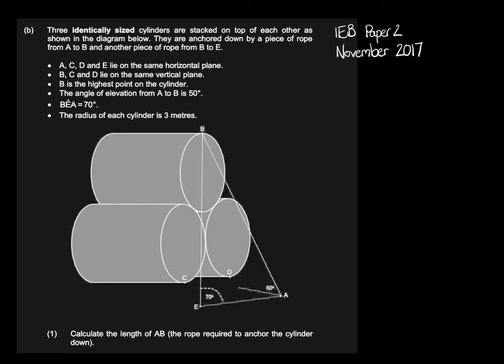The next part of question 12 builds on what we've just done. It says 3 identically sized cylinders are stacked on top of each other. They are anchored down by a piece of rope from A to B and another piece from B to E. It says A, C, D, and E all lie on the same horizontal plane.